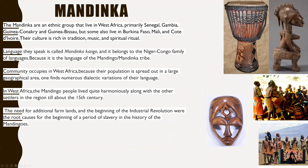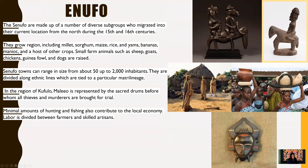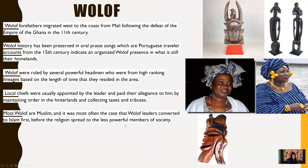The Mandinka tribe — you can see an example here — talks about the language and the farmlands as well. The Inufu tribe talks about the inhabitants of that particular tribe and how they have different amounts of hunting and fishing. The Wuluf tribe — Wulufs are Muslim; that's their religion.